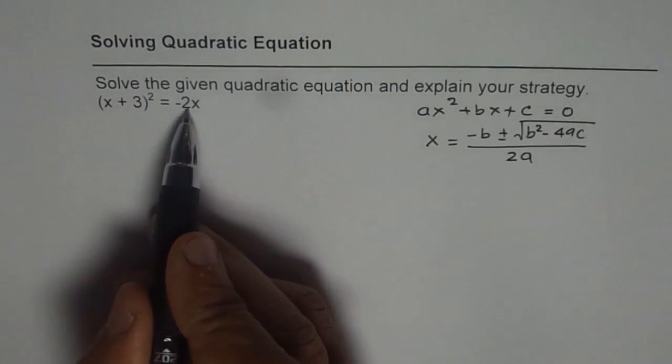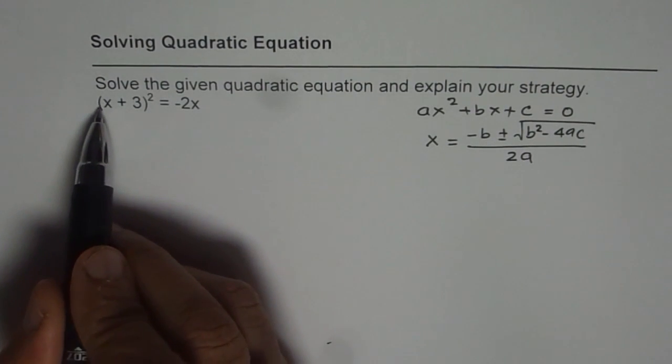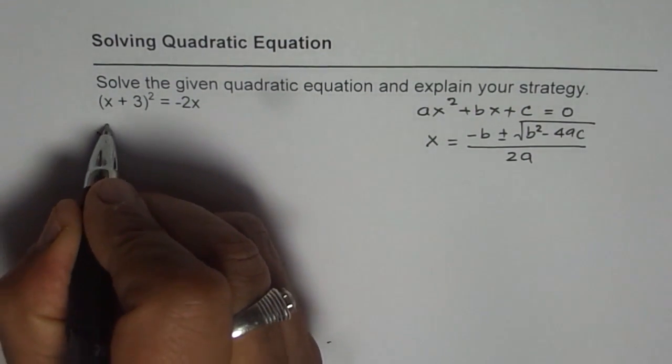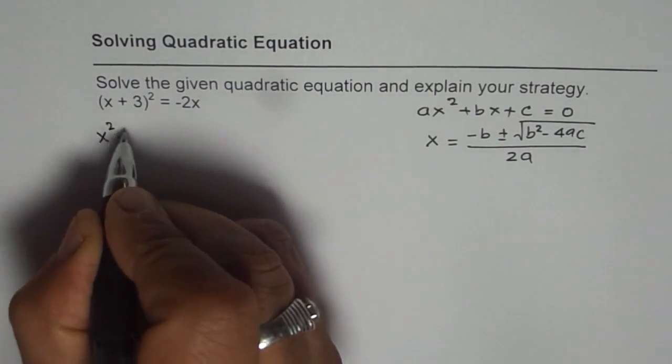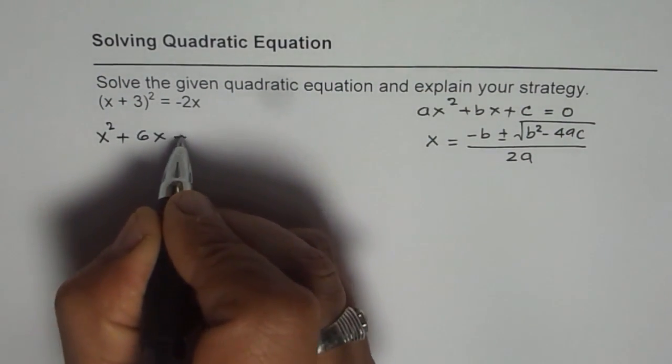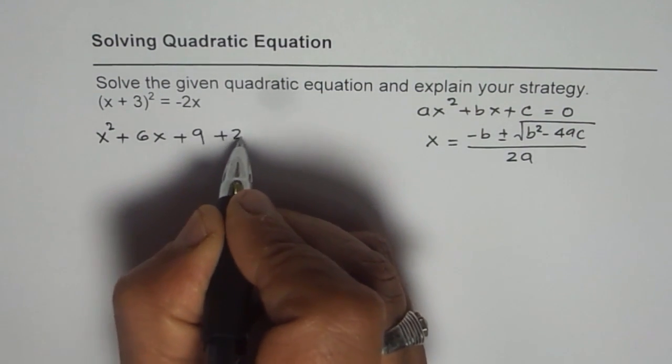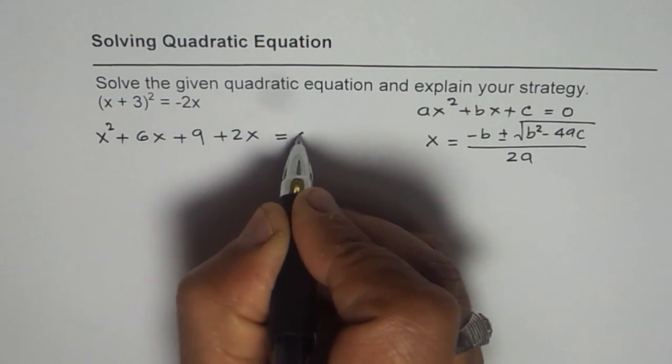So let's bring this -2x to the left side and expand (x + 3)². So what do we get? We get x² + 2 times 3x which is 6x plus 3² is 9, bringing 2x to the left side makes it +2x = 0.